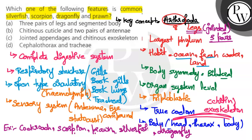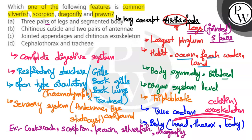Now let's read the options. Option A says three pairs of legs and segmented body — this is incorrect because segmented body is not a universal feature; scorpion and dragonfly do not have a segmented body. Option B says chitinous cuticle and two pairs of antennae — cuticle is correct but two pairs of antennae is incorrect as the number of antennae differs. Option C says jointed appendages and chitinous exoskeleton — this is correct, because jointed legs define Arthropoda and chitin is the exoskeleton material. Option D mentions cephalothorax and trachea — trachea is not found in all, as silverfish has gills and scorpion has book lungs.